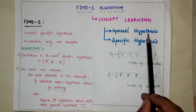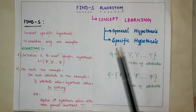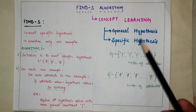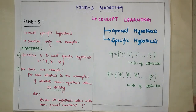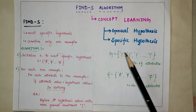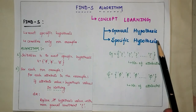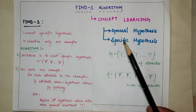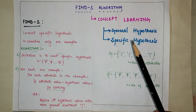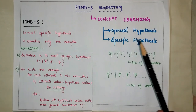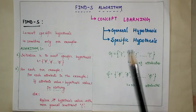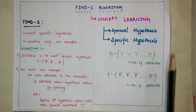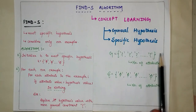In concept learning we have two categories: general hypothesis and specific hypothesis. To generalize with a real problem — if I tell my friend 'get me something to eat,' he can bring me either a pizza, a burger, pasta, or noodles. That is generalized. But if I say 'get me a pizza loaded with onions, capsicum, tomatoes, and sweet corn,' that is now specific. I have specified exactly what I want.